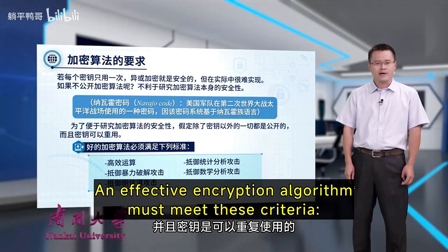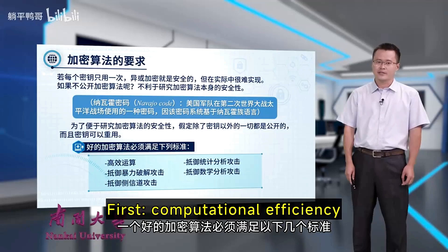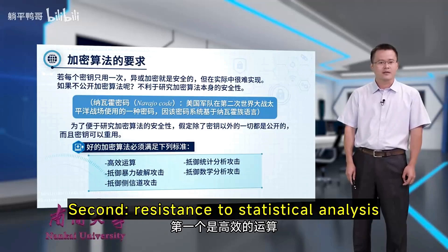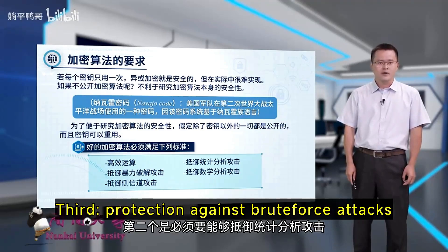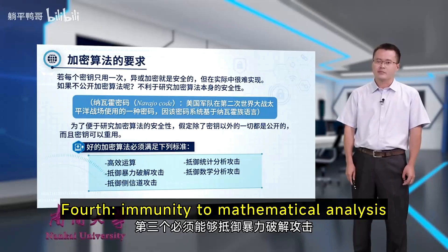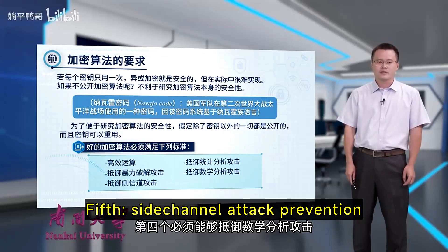An effective encryption algorithm must meet these criteria. First, computational efficiency. Second, resistance to statistical analysis. Third, protection against brute force attacks. Fourth, immunity to mathematical analysis. Fifth, high-channel attack prevention.